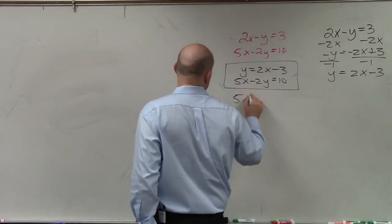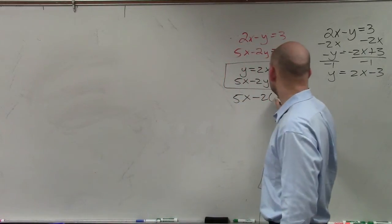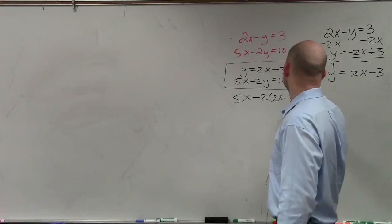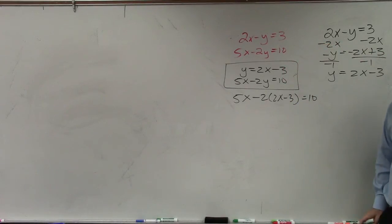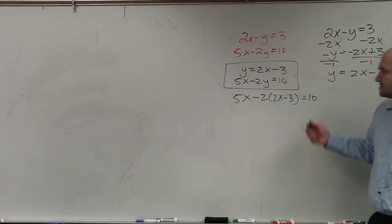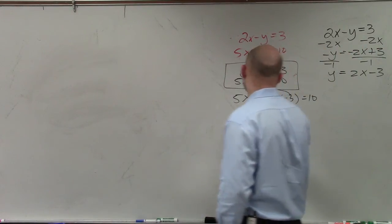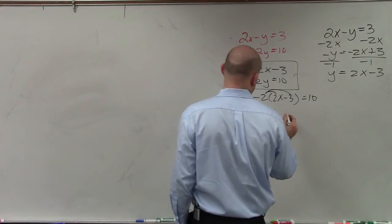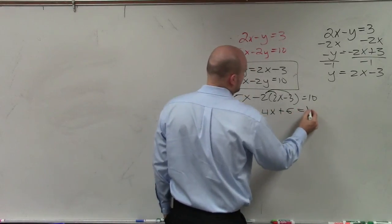So therefore, I have 5x minus 2 times (2x minus 3), which equals 10. And now I'm just going to apply the distributive property, and I have 5x minus 4x plus 6 equals 10.